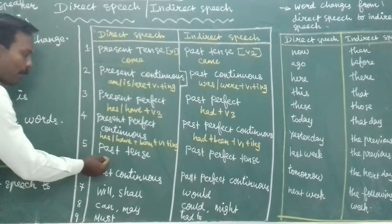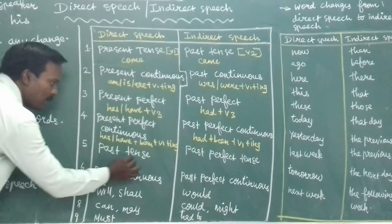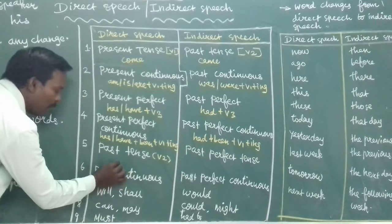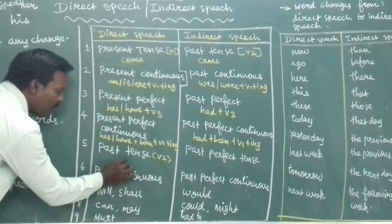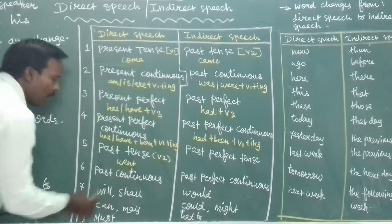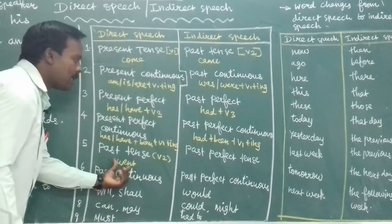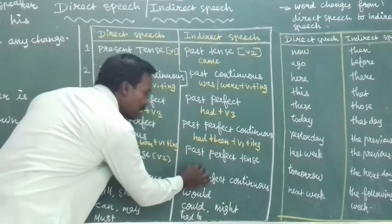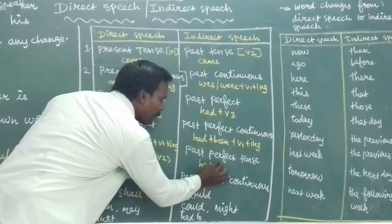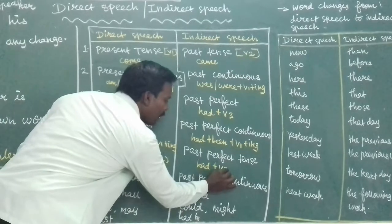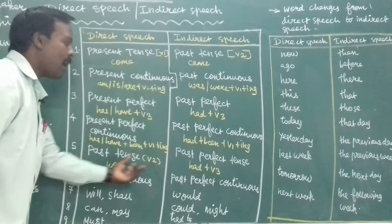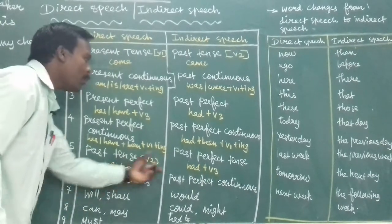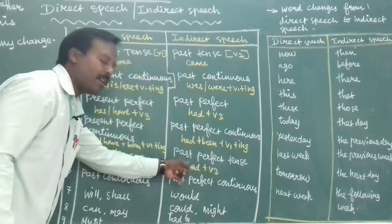Fifth tense change: past tense, which is V2, changes to past perfect tense. For example, went — which is past tense — changes to had gone, which is past perfect tense.